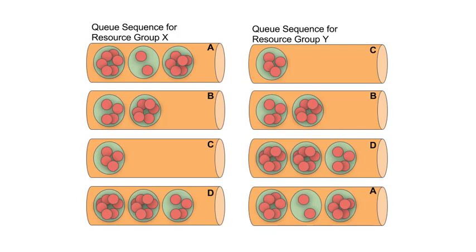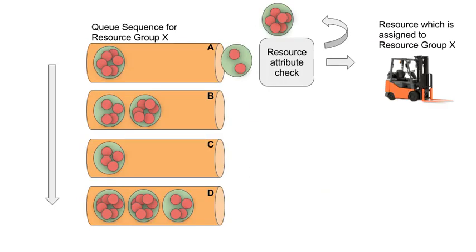Still, we might not know whether all resources belonging to the given resource group are able to process all warehouse orders from a given queue. To implement the required rules, we use so-called resource types in SAP EWM. Every resource working in our warehouse, either in terms of a human being or in terms of a device operated by a human or autonomously, will be assigned to one resource type.